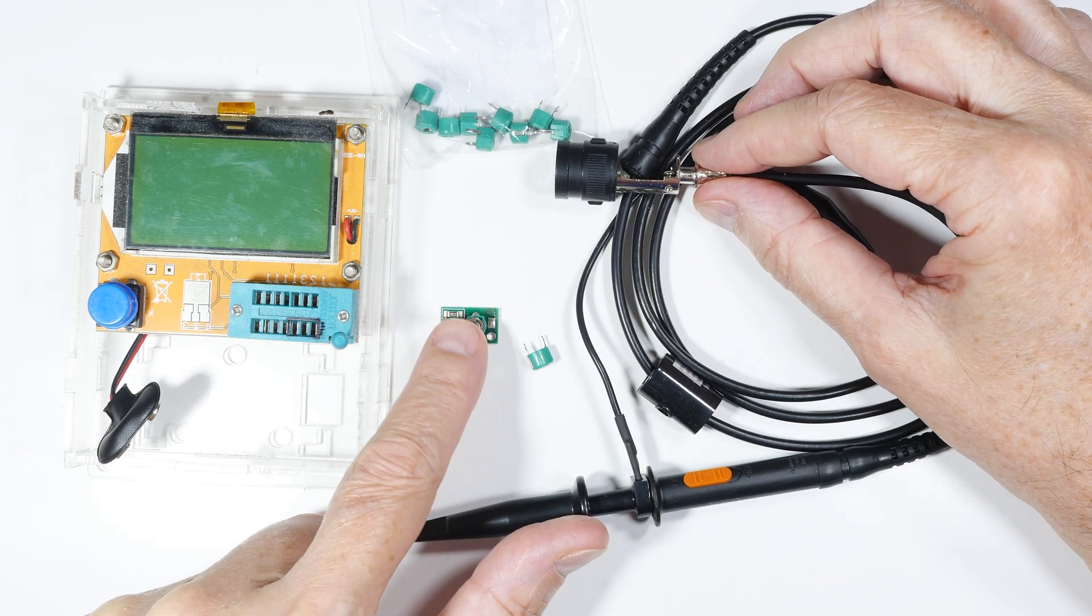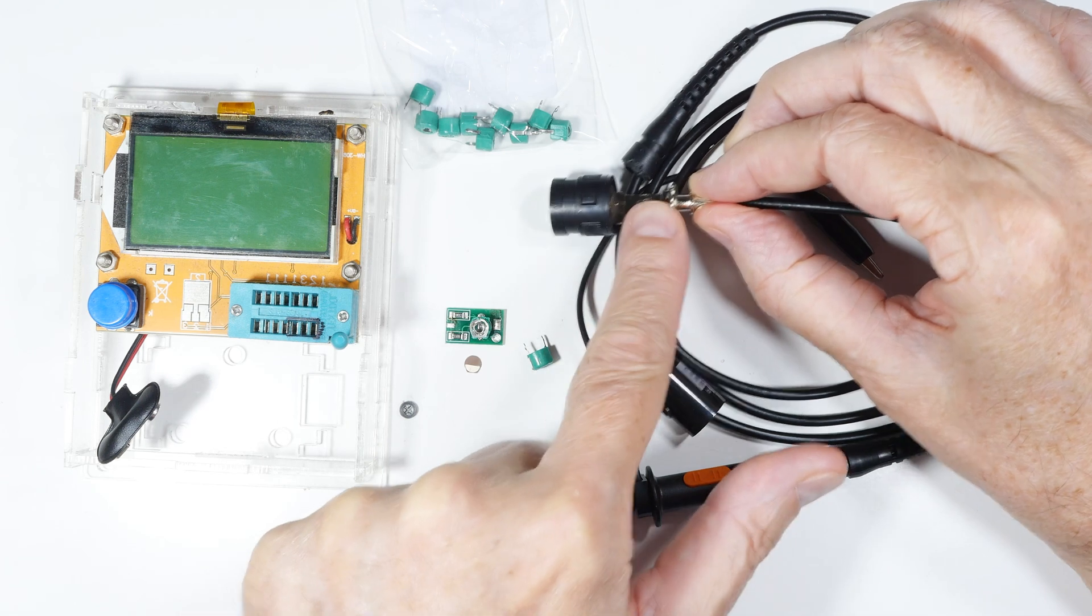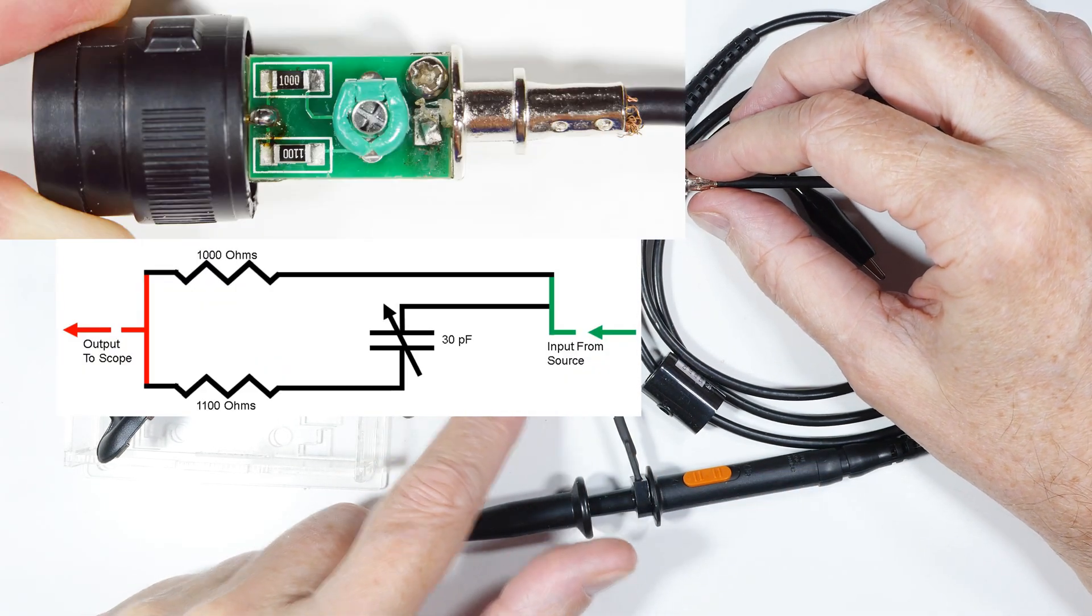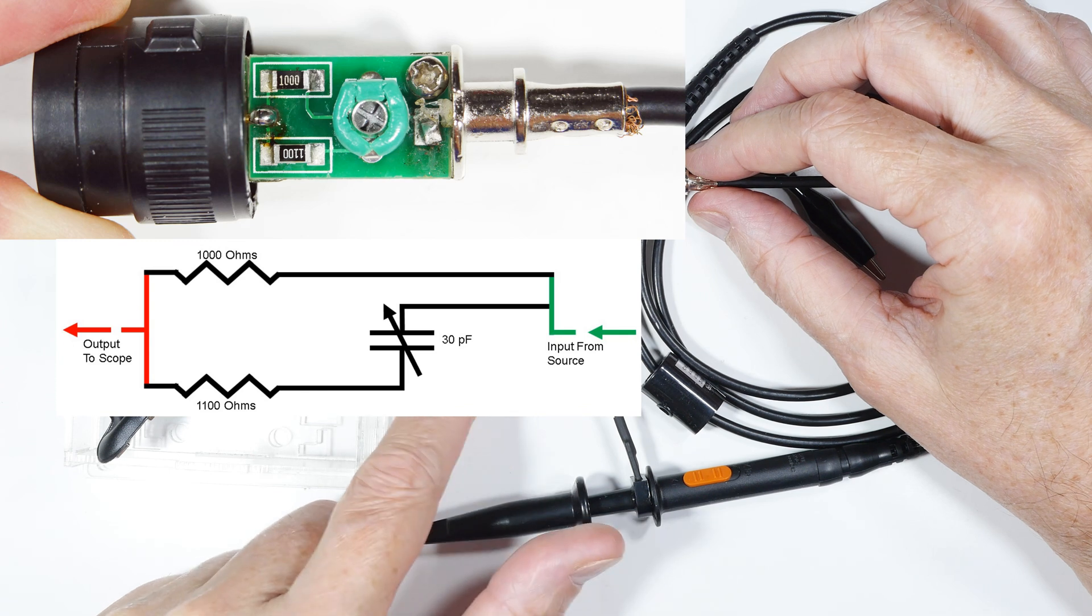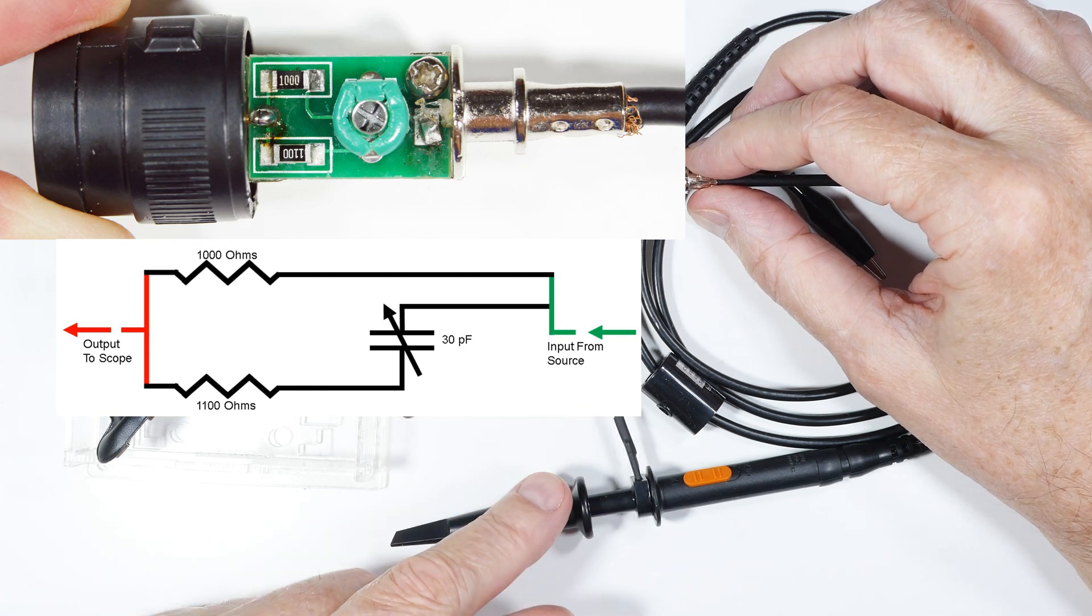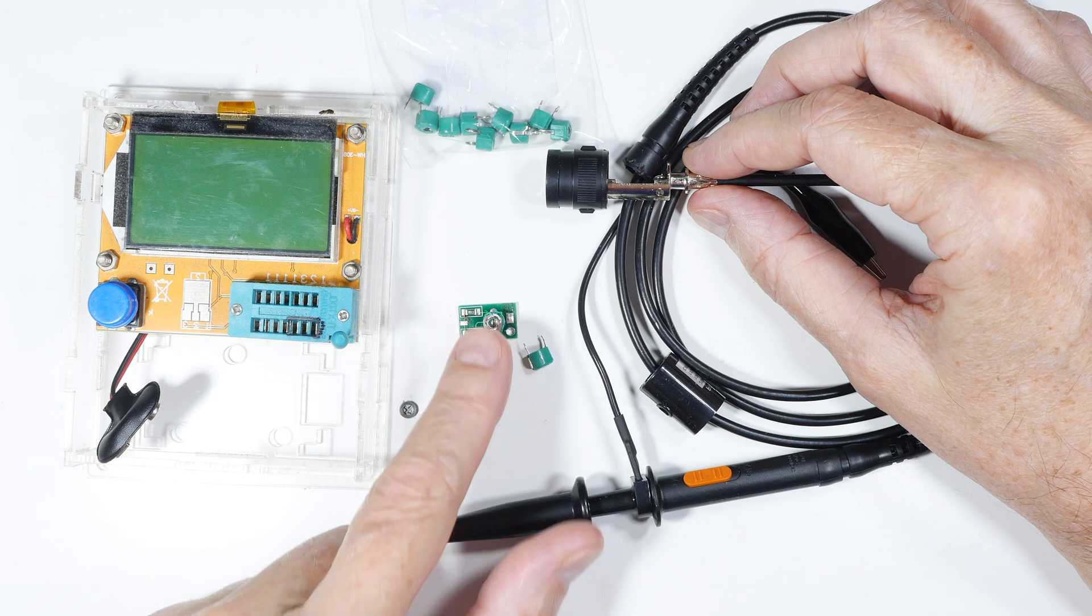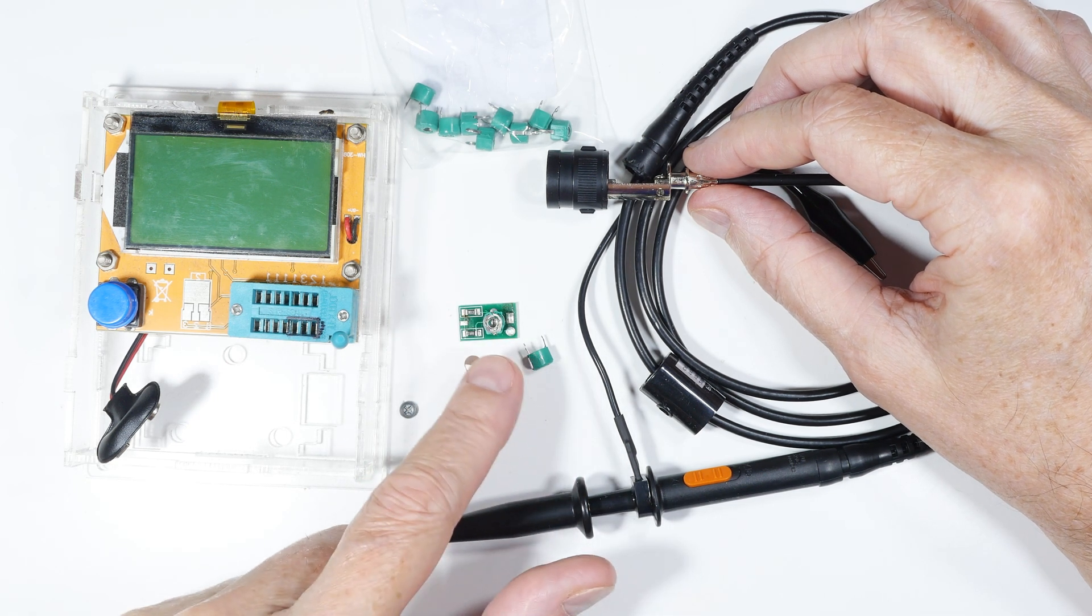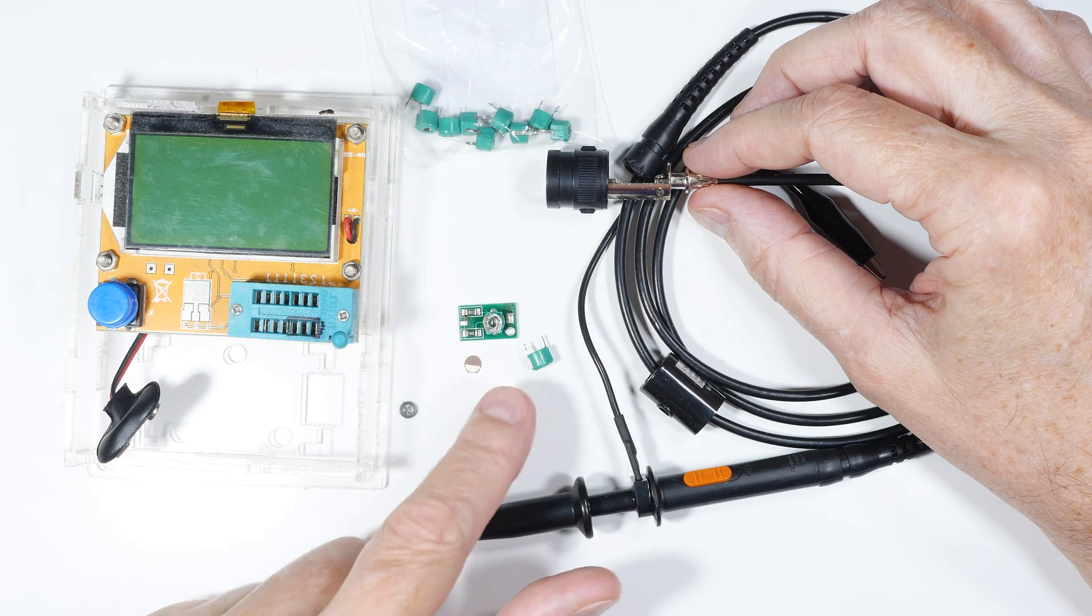On this little board, I opened it up and the circuit is very simple. It's just a trimmer capacitor and two resistors. You can measure the resistors quite easily, those were correct. The capacitor wasn't showing any change when I tried to adjust it.